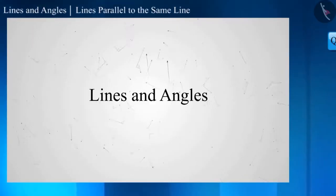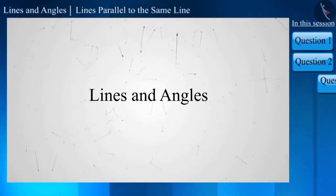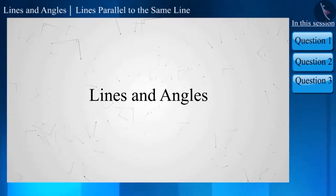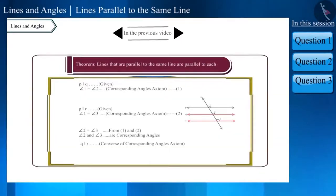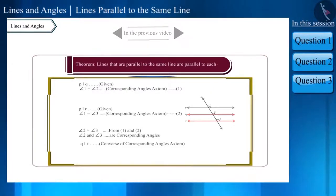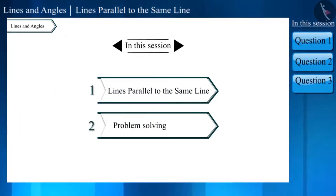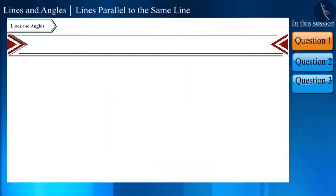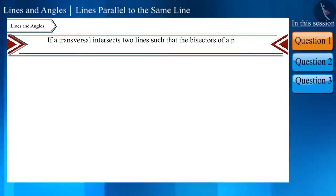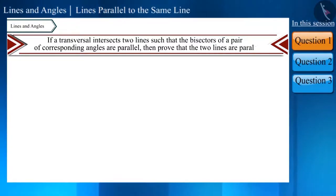Hello friends, welcome to this video on lines and angles. In the previous video we discussed the properties of lines parallel to the same line. Today we will solve some questions related to the same. Let's start with our first question: if a transversal intersects two lines such that the bisectors of a pair of corresponding angles are parallel, then prove that the two lines are parallel.